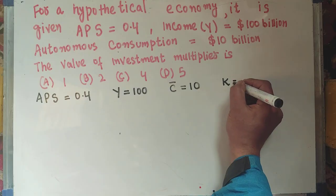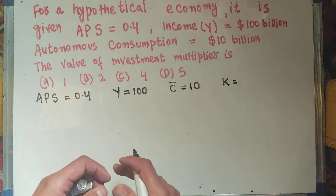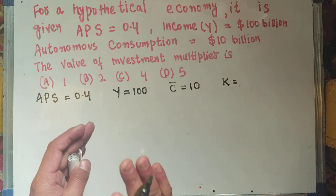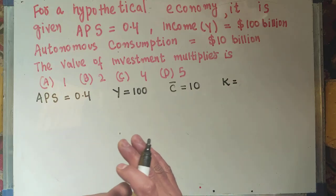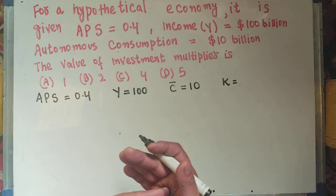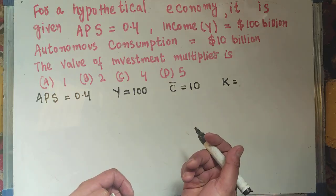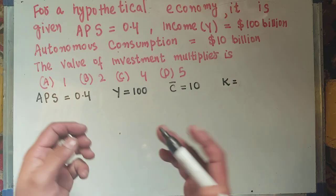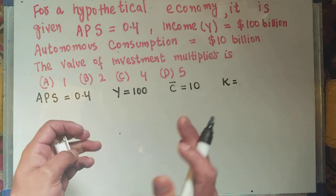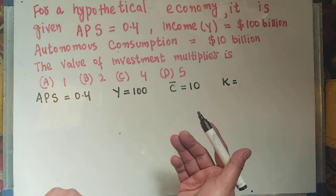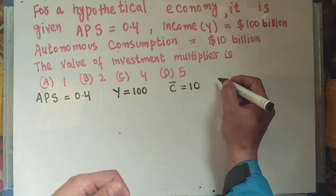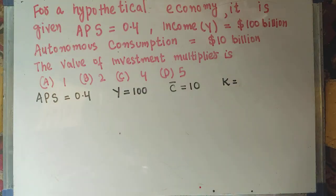We need to find out the value of the investment multiplier. By investment multiplier, we mean it measures the effect of an initial change in investment on the economy — that is, it shows how much additional income is generated in the economy from an initial investment. Now we need to find out the value of K.